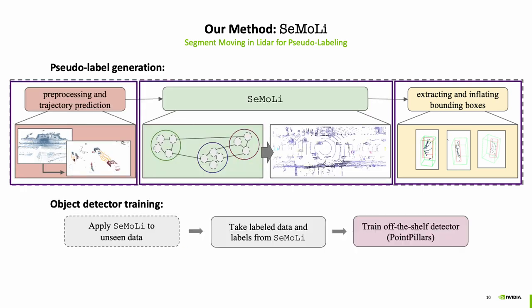Finally, we apply Simoli on unseen data, take the small amount of labeled data that we used to train Simoli as well as our pseudolabels, and combine both to train an off-the-shelf detector.